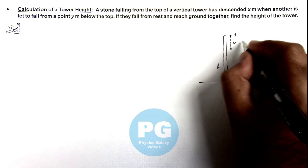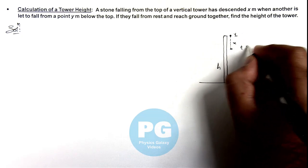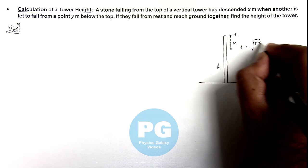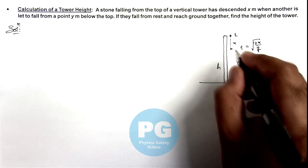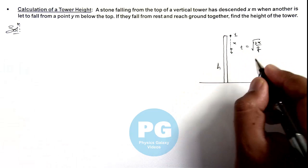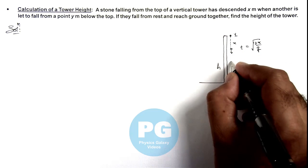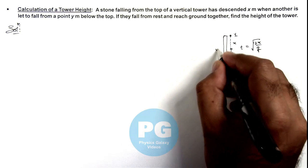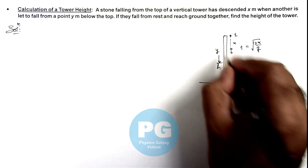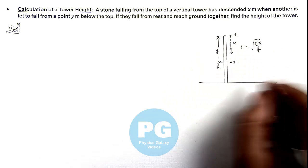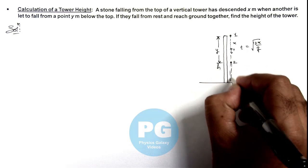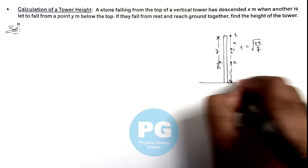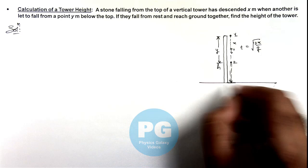Obviously the time taken in descending x meter we can write as root 2x by g. Then another stone is dropped, obviously at this point it'll attain some speed, and another stone 2 is dropped from a height or a depth y meter below the top. We are given that stone 1 and 2 will reach the bottom of ground, the bottom of this tower together, the ground together.